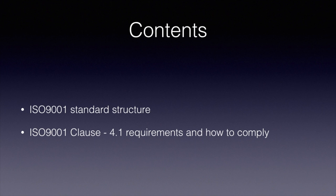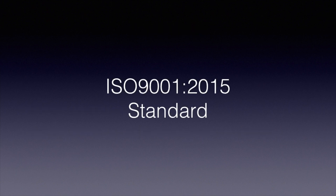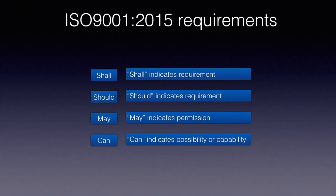ISO 9001 uses terms such as 'shall,' 'may,' 'should,' and 'can,' which have specific meanings throughout the standard. 'Shall' means a requirement — these must be complied with to receive certification. 'Should' means a recommendation by ISO based on good practices; your organization can decide whether to follow or not. 'May' indicates a permission to choose from various approaches to satisfy a requirement. 'Can' means possibility.